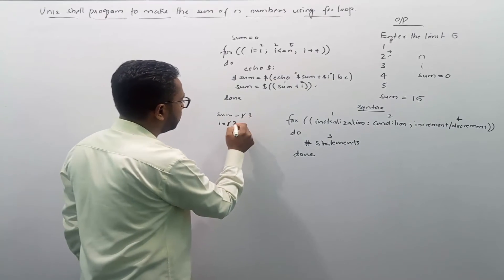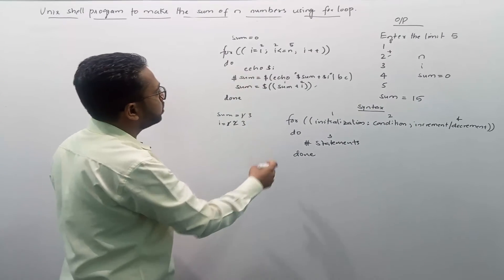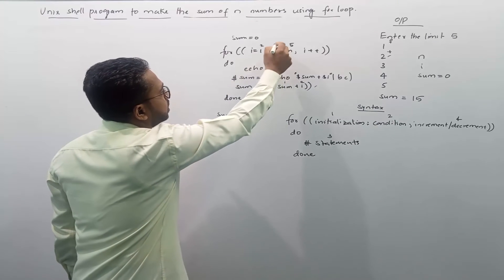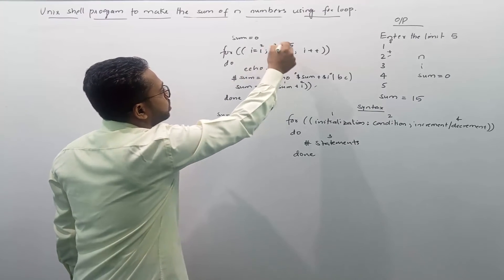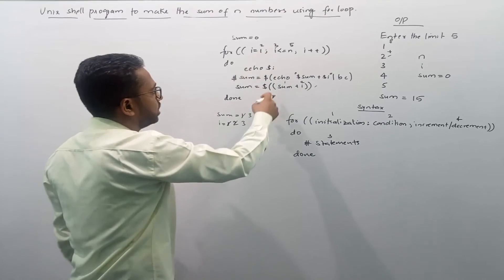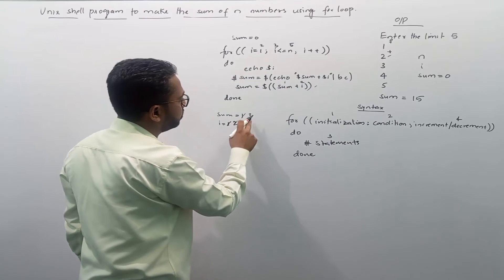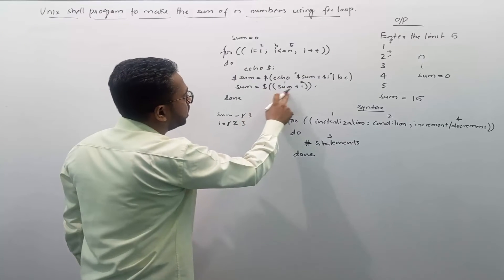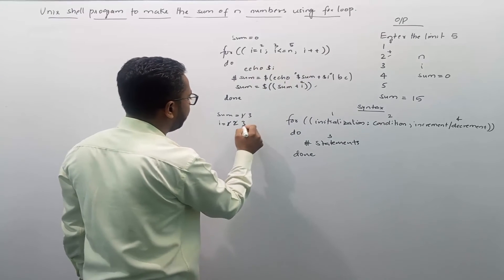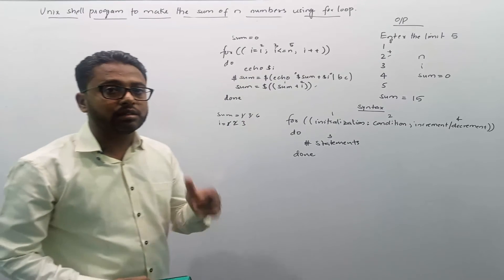Next i becomes 3. The condition 3 ≤ 5 is true, so control enters the loop. Sum was 3, and 3 plus i which is 3 gives 6. Sum is now 6. With each iteration i increments by 1 and sum accumulates.